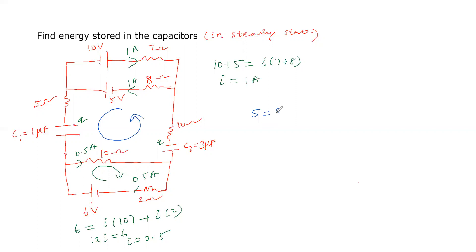So 5 equals 8 times 1 (which gives 8), plus 10 times 0.5 (which gives 5), plus Q/C for the first capacitor (C = 1 µF, so Q/1), plus Q/C for the second capacitor (C = 3 µF, so Q/3).